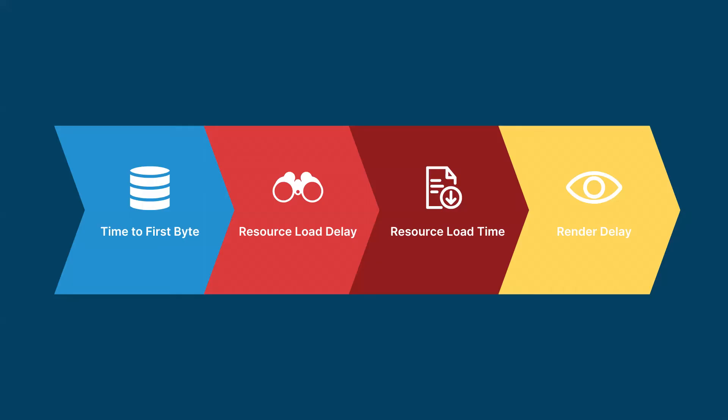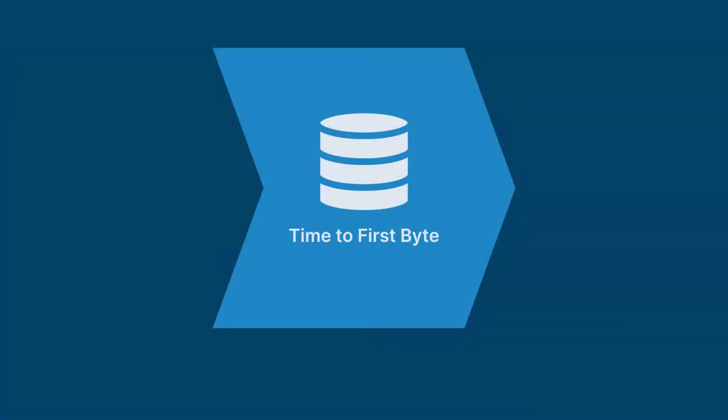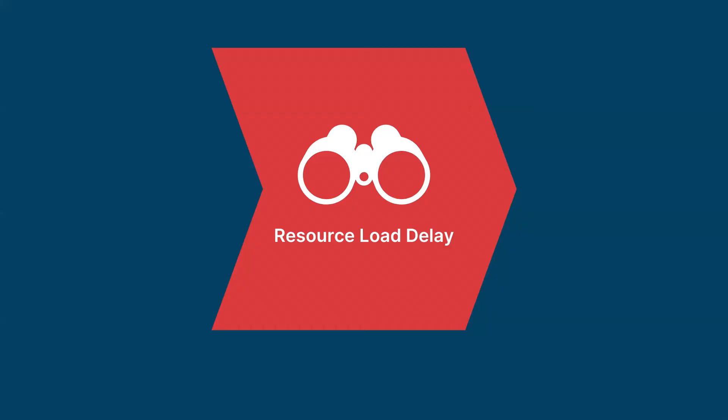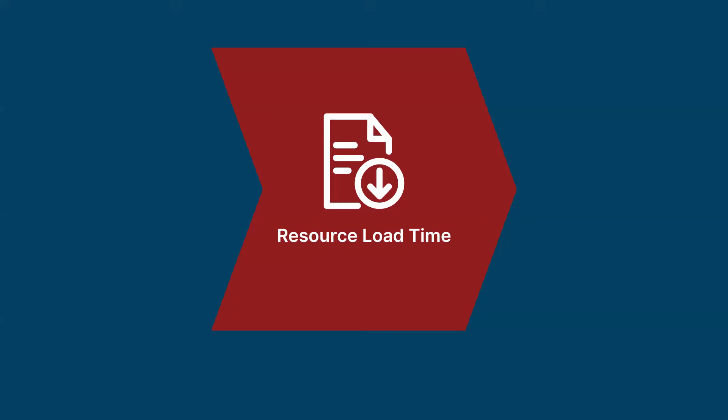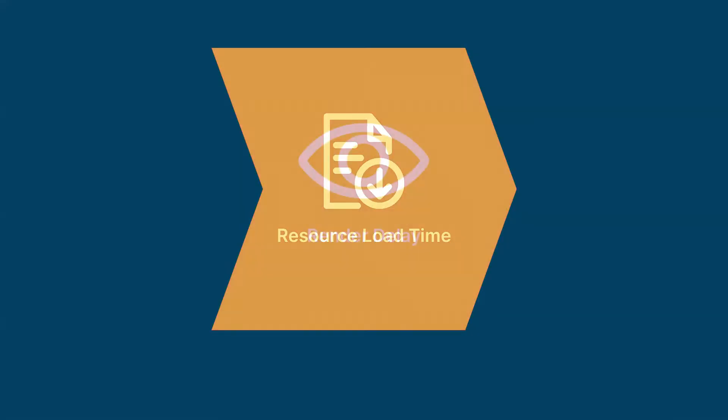In order to best optimize LCP it is important to understand its sub-parts. LCP is made up of four components. Time to First Byte measures how long to start loading the HTML document from the website server. Then there's resource load delay, which is the time for the browser to discover the LCP image. Next is the resource load time, which measures the time for the browser to download the LCP image.